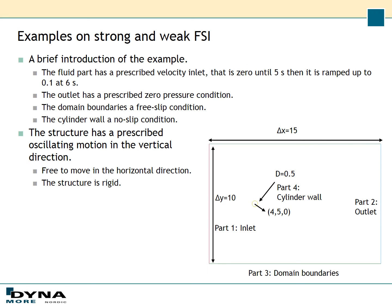Now we're going to look at an example that demonstrates the difference between strong and weak FSI coupling. The inlet has a prescribed velocity of 0.1 that is ramped up after five seconds — so during the first five seconds the velocity is zero. The outlet has a zero pressure condition and the domain boundaries have a free slip condition. The cylinder has a no-slip condition, and the structure located inside the yellow circle is free to move in the horizontal direction, while in the vertical direction it has a prescribed oscillating motion. The structure is rigid.